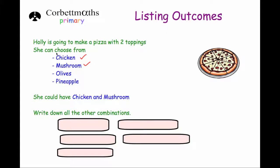Here's a typical question. Holly is going to make a pizza with two toppings and she can choose from chicken, mushroom, olives and pineapple. One possible combination she could have would be chicken and mushroom, because it's got two toppings. The question says write down all the possible combinations.